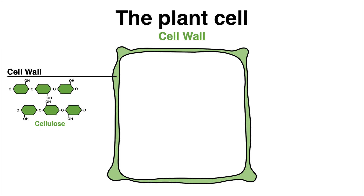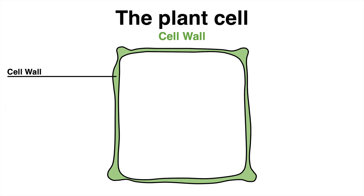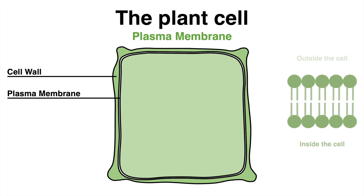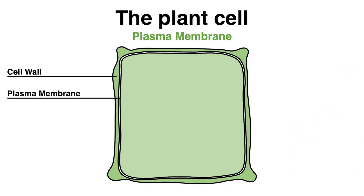As for all eukaryotic cells, plant cells also possess a plasma membrane. This structure made of lipids is selectively permeable — certain molecules can pass through and others cannot enter or exit. The main function of the plasma membrane is to regulate nutrient and mineral transport.